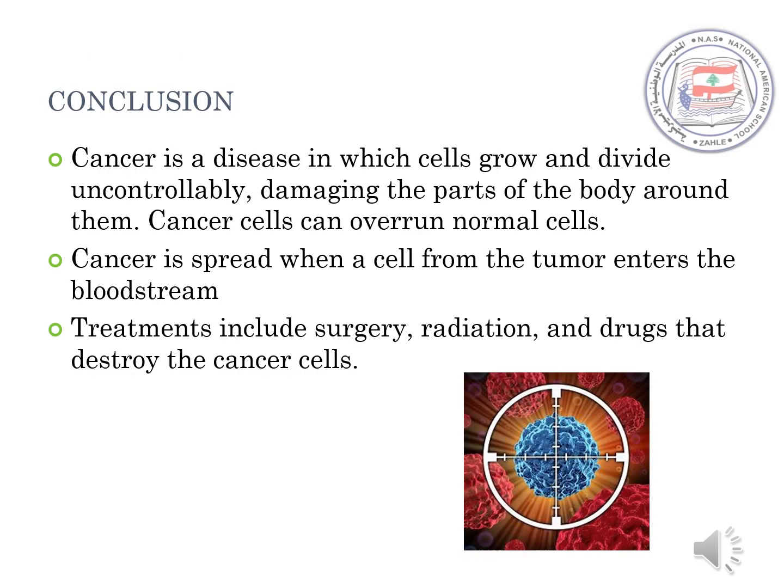As a conclusion, cancer is a disease in which cells grow and divide uncontrollably, damaging the parts of the body around them. Cancer cells can overrun normal cells. Cancer spreads when a cell from a tumor enters the bloodstream. Treatments of cancer may include surgery, radiation, and drugs that destroy cancer cells, which is chemotherapy.